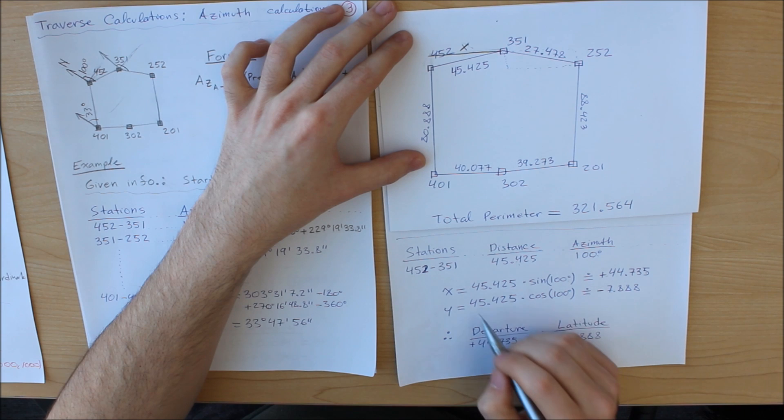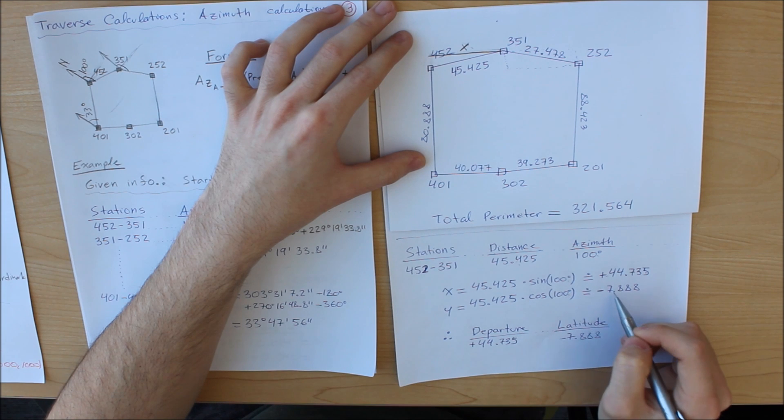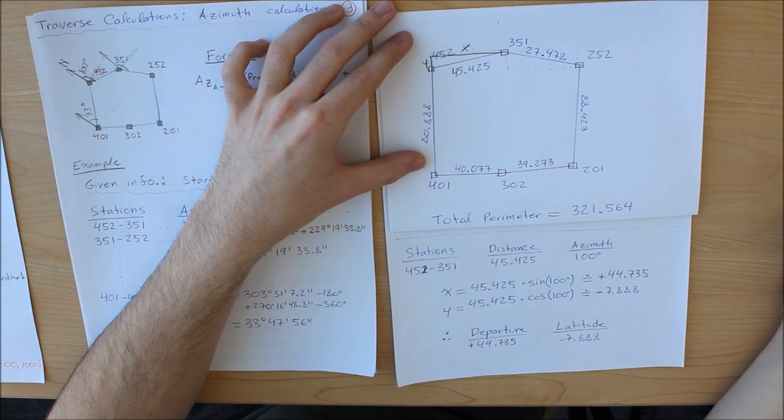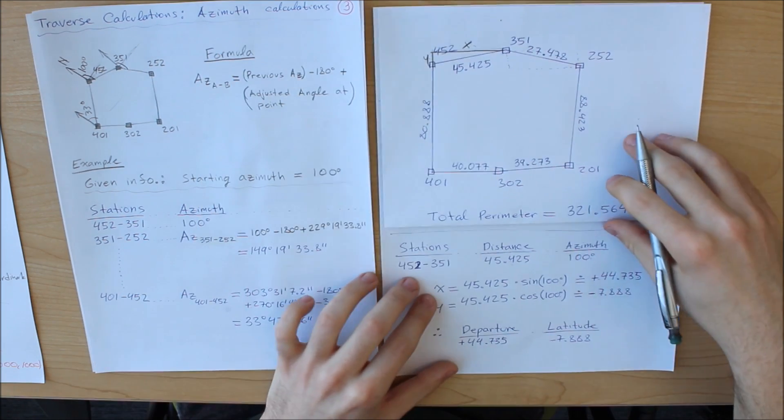Now the y component is 45.425 times cos of 100 degrees. That is equal to negative 7.888 and that is this distance right here. So moving on, you must do this for each one.